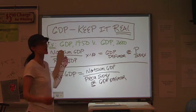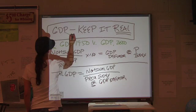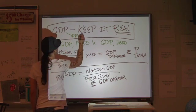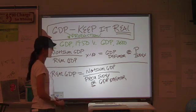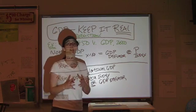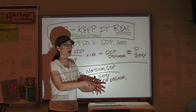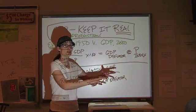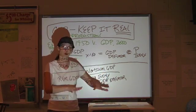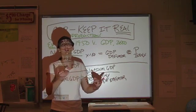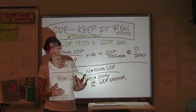So for gross domestic product, we want to know what we're actually producing. If we're trying to get at the level of production, we want to take a change in prices completely out of the equation. With CPI, we're looking at inflation, so we keep production constant. For GDP, we're looking at production, we keep prices constant. Otherwise, you're throwing too many variables into the mix and you're not really getting the data that you want.